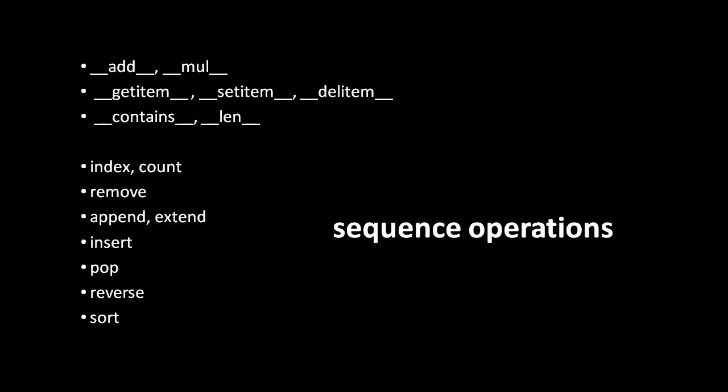Looking first at sequence types, these are the operations which pretty much all Python sequence types will have, with the caveat that immutable sequences will be missing some of these operations for the obvious reasons that some operations will modify the sequence, and obviously those can't apply to the immutable sequence types. Going over these briefly, first at the top you'll see a number of special methods, most of which are operator methods — like add and mul for example — which are really just the methods invoked when you use the plus symbol operator on a sequence, or when you use the multiplication operator on a sequence.